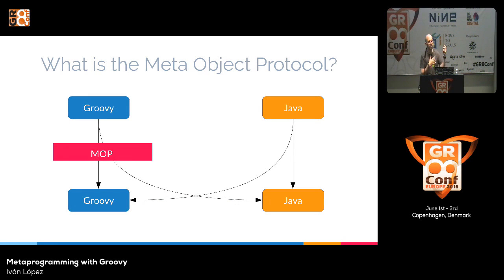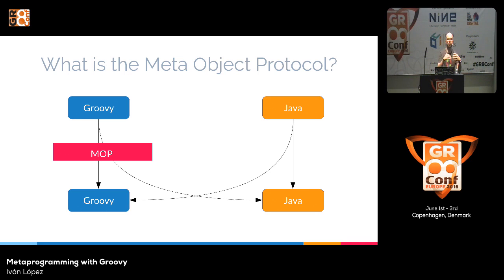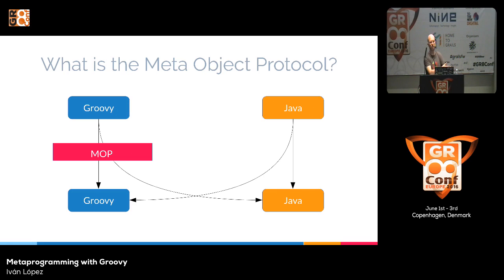It's important to understand that when the Groovy compiler compiles our code, it generates bytecode that dispatches method execution through this MOP layer. It doesn't matter if we're calling Groovy code or Java code from Groovy — all calls are always done through this MOP layer, and we can hook into it. On the other hand, if we use Java and call Groovy or Java code, the execution is dispatched directly to the final method.